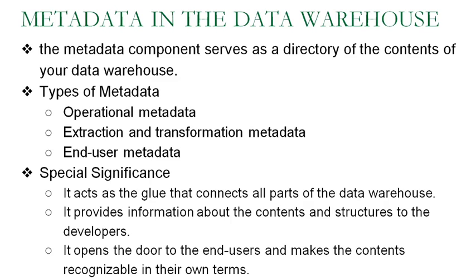Next is extraction and transformation metadata. It contains data about the extraction of data from source systems — namely the extraction frequencies, extraction methods, and business rules for data extraction. This category of metadata also contains information about all the data transformations that take place in the data staging area. Whatever transformation we perform, the related information is stored here. Similarly, how and at what frequencies we extract the data, which tools or techniques we use, and what the business rules are — all that information is captured in the extraction and transformation metadata.